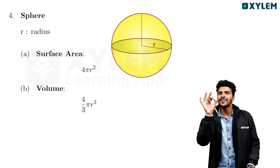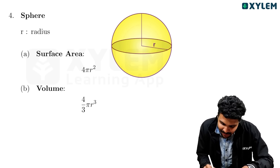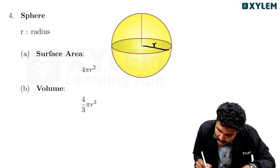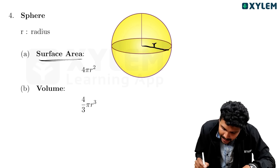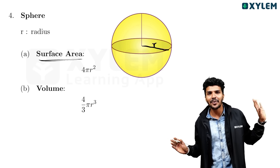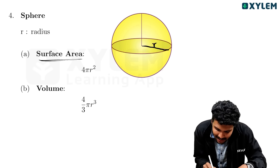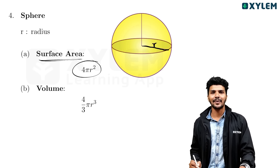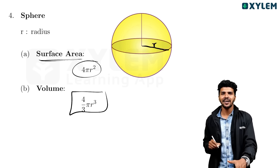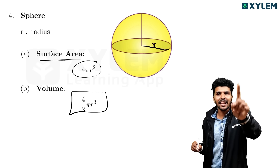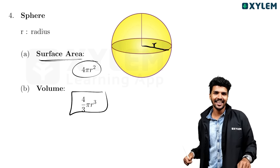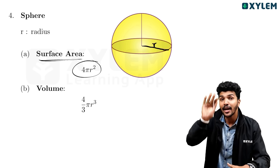Now I'm going to study the sphere. The sphere is simple - the sphere has radius r. The surface area of the sphere: the curved surface area is 4 pi r squared. The volume is 4 by 3 pi r cubed.